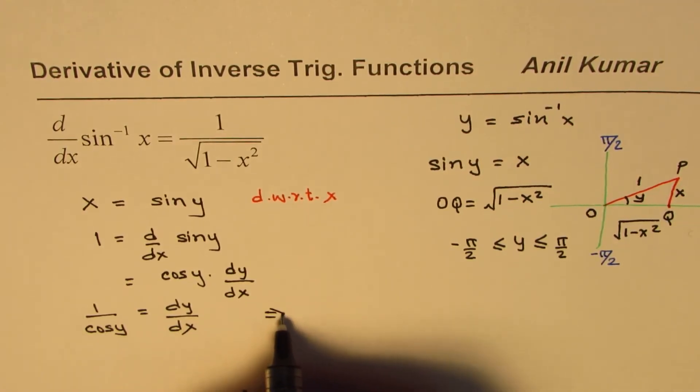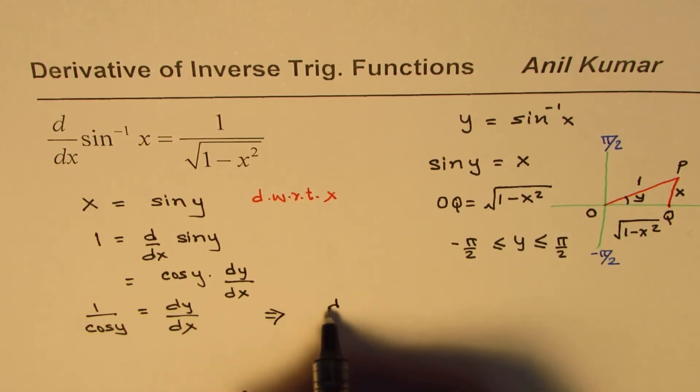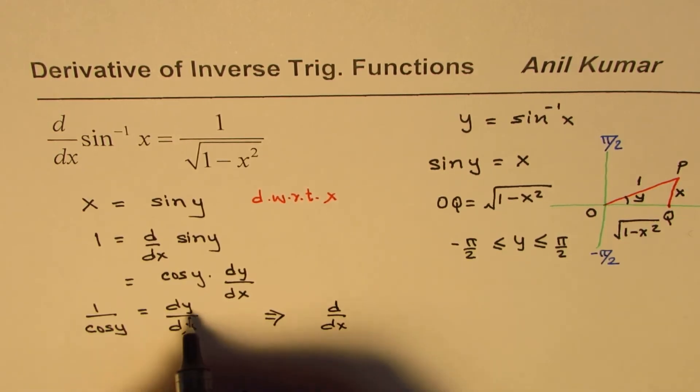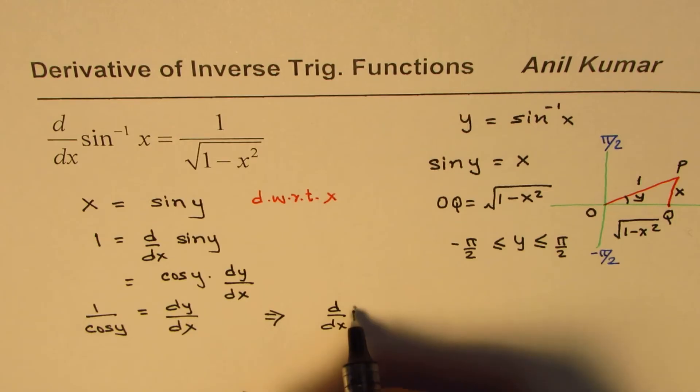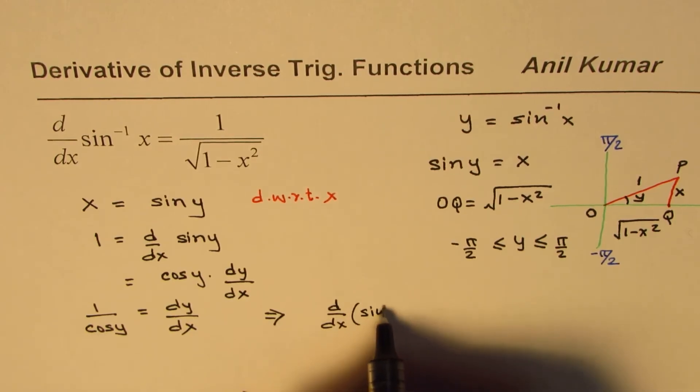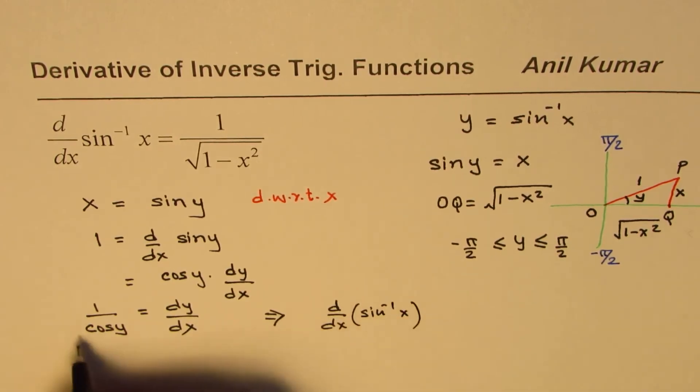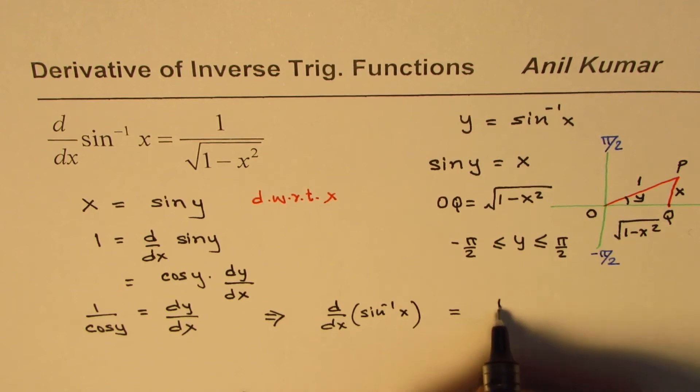So from here, it implies, so instead of y, we are adding d dx, instead of y, sine inverse x. So 1 over cos y is equal to 1 over cos y.